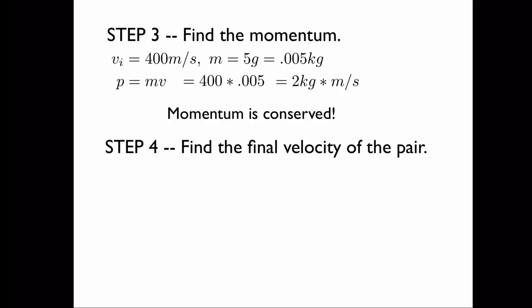So, during step 4, we'll find the final velocity of the pair. We do this by first noting that the initial momentum is equal to the final momentum, and then noting that the final momentum is equal to the final velocity times the final mass. Now the final mass is equal to m, the mass of the bullet, plus M, the mass of the block. Big M is 0.4 kilograms.